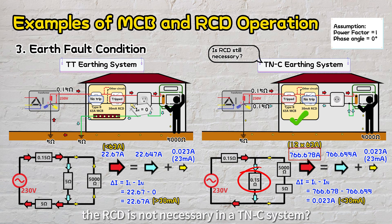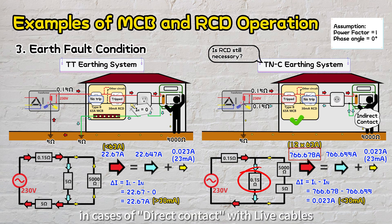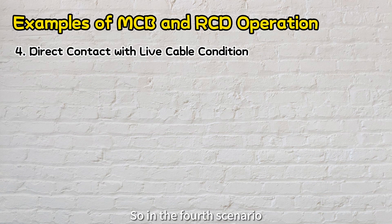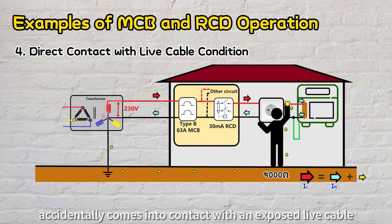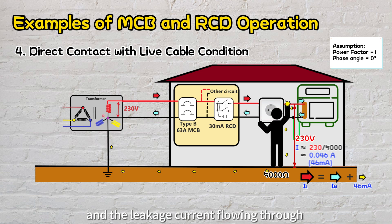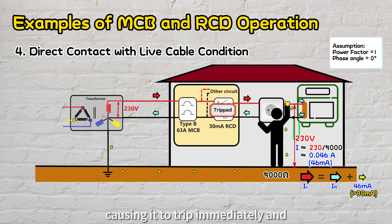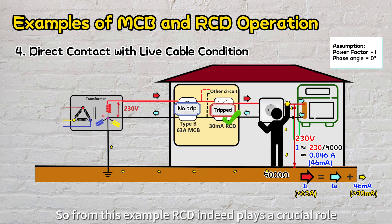Does this imply that the RCD is not necessary in a TNC system? In fact, the previous scenario considered indirect contact with equipment frames. In cases of direct contact with live cables, MCBs cannot provide any protection. So in the fourth scenario, let's consider a situation in a TNC system where a person with a body impedance of 5,000 ohms accidentally comes into contact with an exposed live cable. The voltage across the person will be approximately 230 volts, and the leakage current flowing through the body would be approximately 46 milliamps. Consequently, the difference in currents exceeds the 30 milliamps sensitivity threshold of the RCD, causing it to trip immediately and effectively reduce the risk of electric shock. Due to the small current, the MCB would not trip during direct contact with the live cable. So from this example, RCD indeed plays a crucial role.